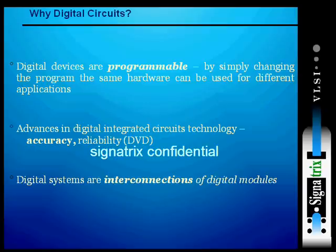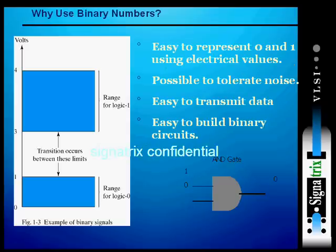Why use binary numbers? Binary, as the word indicates, means either a state that is in a set condition or in the reset condition — meaning a one or a zero. It is easy to represent zero and one using electrical values, and it is possible to tolerate noise, easy to transmit data, and easy to build binary circuits. All binary values are digital values — you represent zero and one and call them digital values.